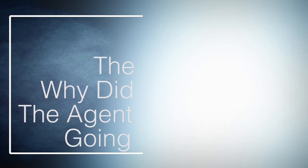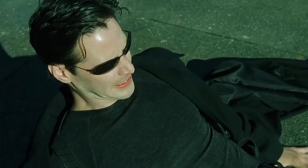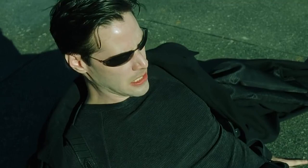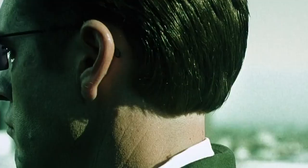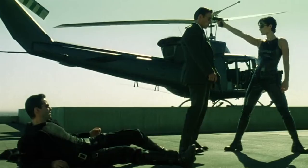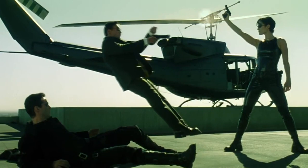Number 5: The Matrix – Why did Trinity warn the agent that she was going to shoot? In the first Matrix film, it's noted that the agents are essentially unkillable beings of death — fighting one is like trying to stop a metal fan with your testicles. So when Trinity manages to sneak up on one, a feat that is up to that point deemed virtually impossible, she calmly and slowly says the words, "Dodge this."